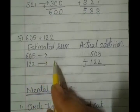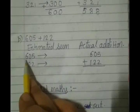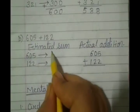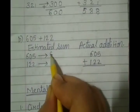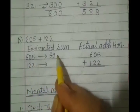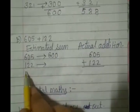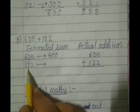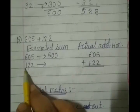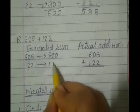605. As at the tens place, we are having 0, we will not going to increase hundreds place digit by 1. We will keep it as it is. So 6 will remain as 6 only. At the tens and ones place, we will write down 0. So it will become 600. Next number is 122. At the tens place, we are having 2. So again, no increase in hundreds place digit. So 100.